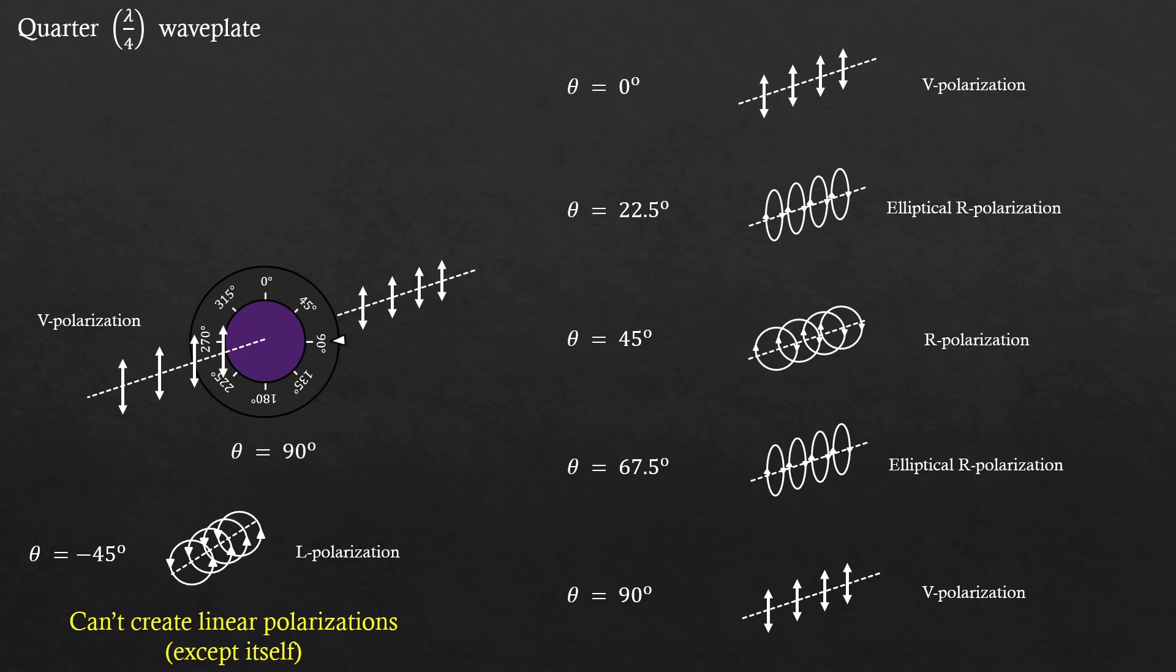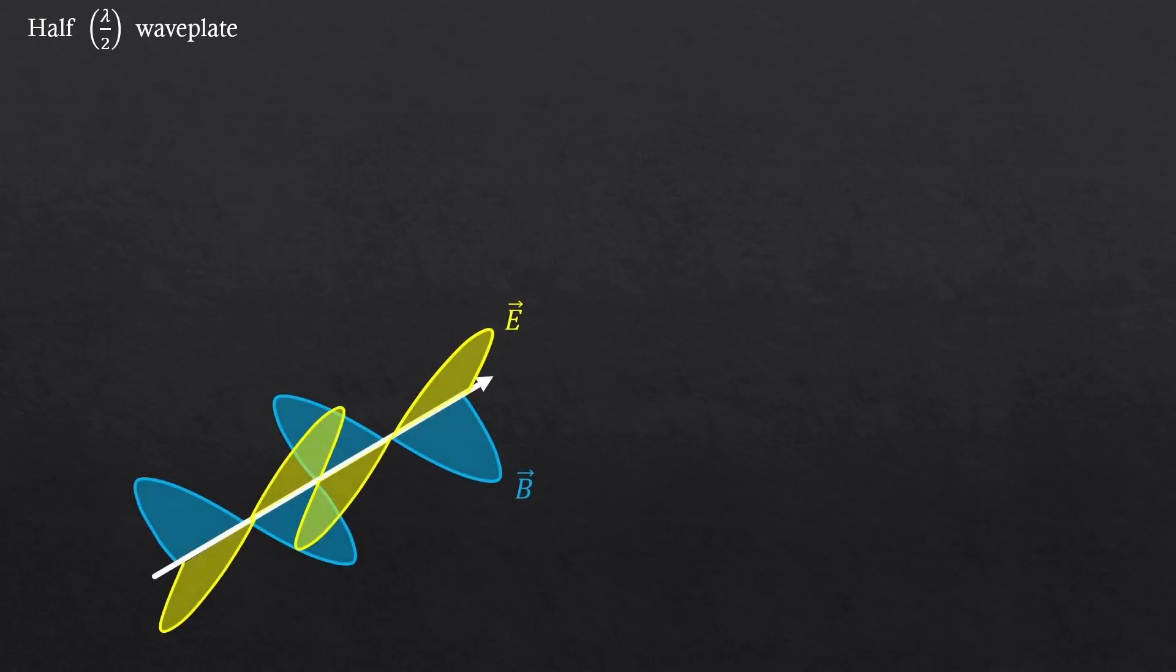So let's see why all these are happening. Again, let's look at the half wave plate first. We have an electromagnetic wave. And again, we are basing on the electric polarization. So let's forget about the magnetic polarization.